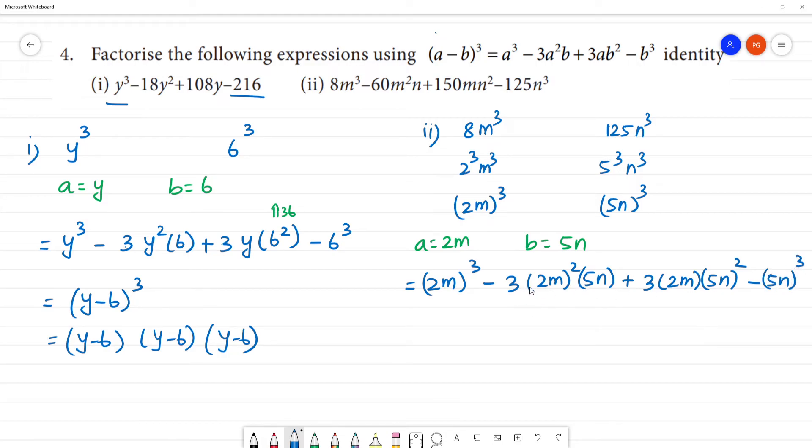So now simplify: 2 square is 4, 4 into 3 is 12, 12 into 5 is 60, so 60m²n. Next, 5 square is 25, 25 multiplied by 6 is 150, so 150mn². And 5 cube is 125n³.